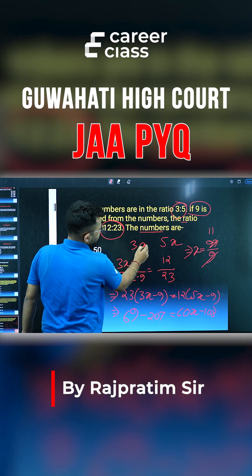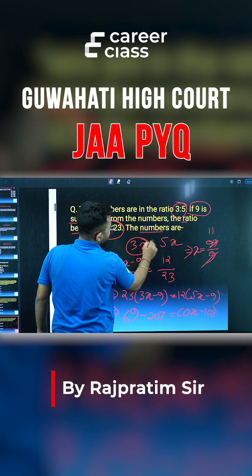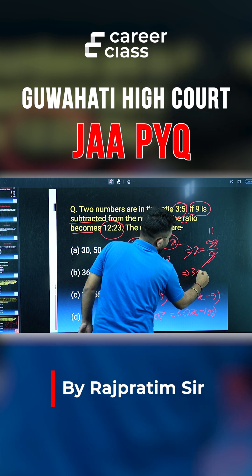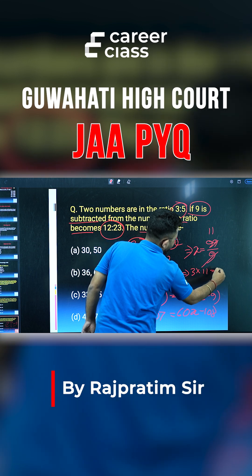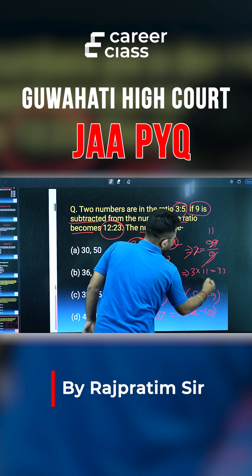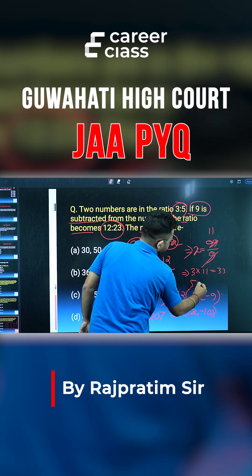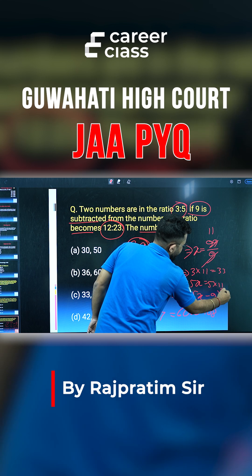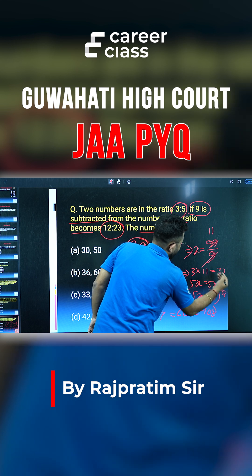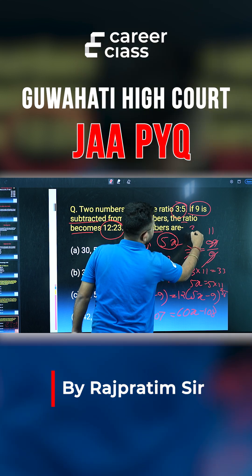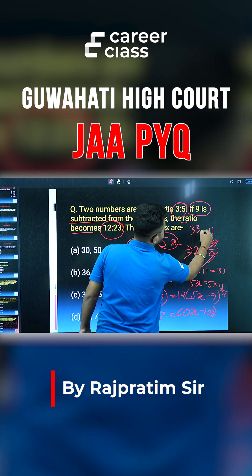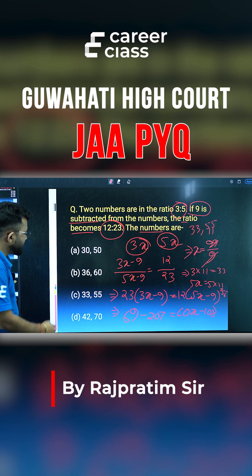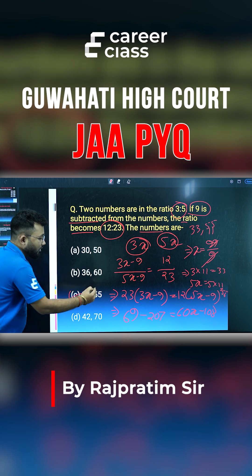The original numbers are 3x and 5x. That means 3 into 11 is 33, and 5 into 11 is 55. So the original numbers are 33 and 55. Our answer is C, so C is correct.